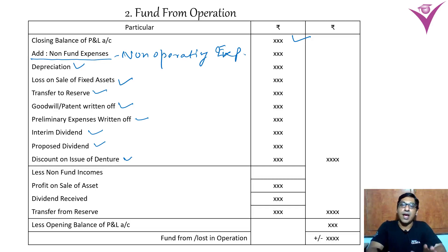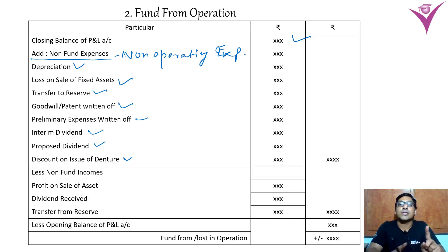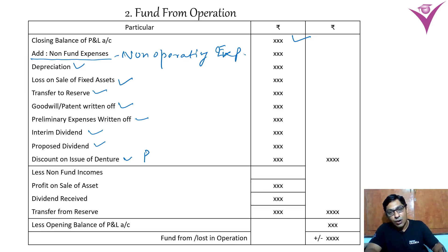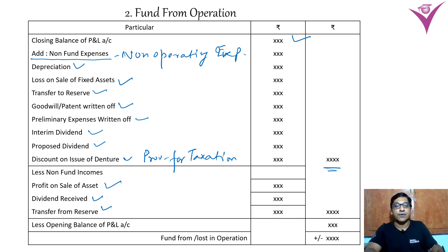If the question does not state that provision for taxation and proposed dividend are current liabilities, then we do not treat them as current liabilities. If the question states they are current liabilities, then they go into the statement of change in working capital. Otherwise, we write and add them in the adjusted P&L account. So the provision for taxation is added here; in total we will write less non-fund income — profit on sale of assets, dividend received, and transfer from reserve — and minus this amount.